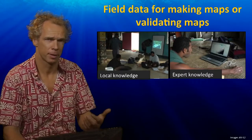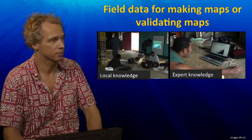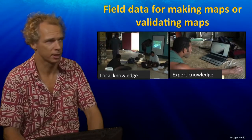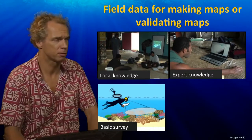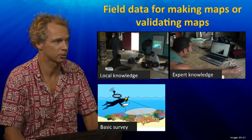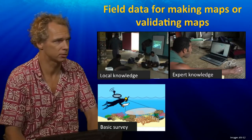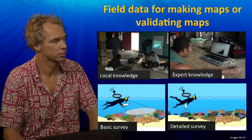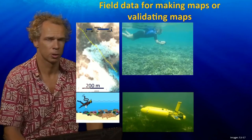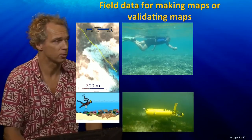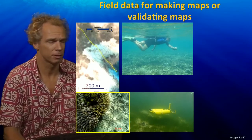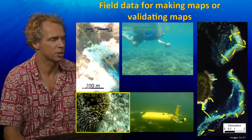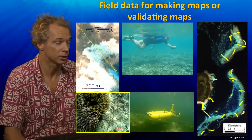To fill in the gaps and help with mapping these environments, there are different ways to collect field data. This can be done by local or expert knowledge — talking with local people who use the area or experts in the field to get as much information as possible. Alternatively, we go into the field ourselves using a GPS floating at the surface to get a position, then snorkeling or diving to write down what we see — a basic survey. We can also conduct detailed surveys using phototransects, where a diver, snorkeler, or robot follows the bottom and takes photos at regular intervals. These photos are then georeferenced to the satellite image based on synchronization of the camera and the GPS at the surface.